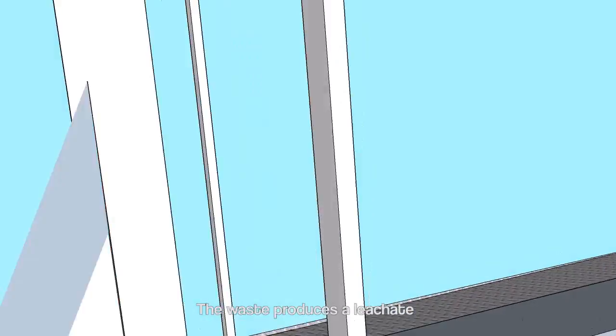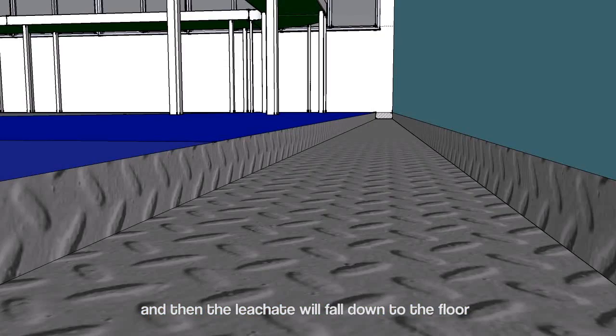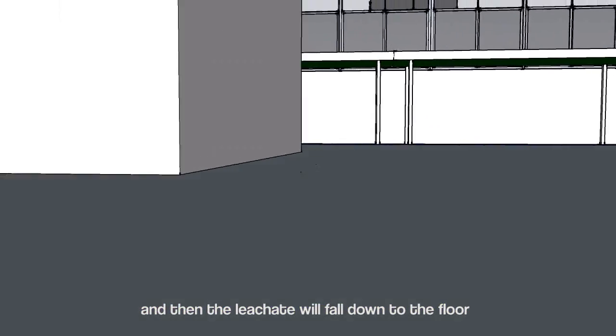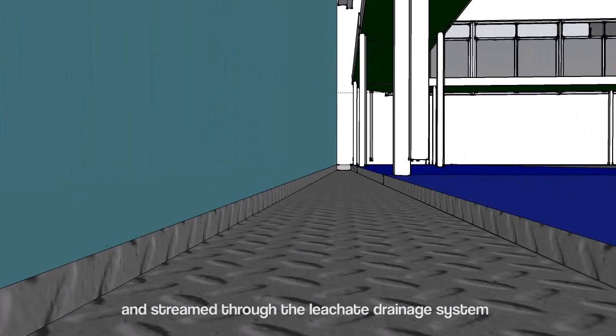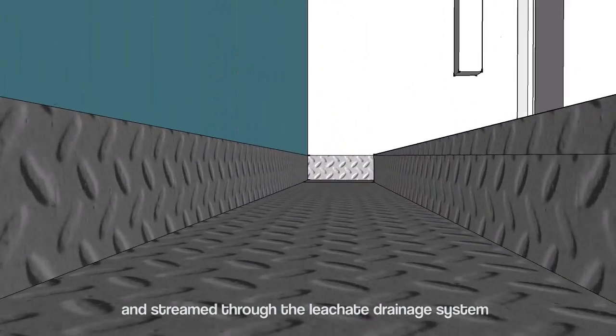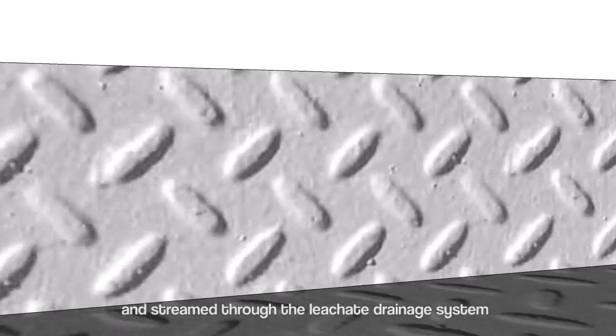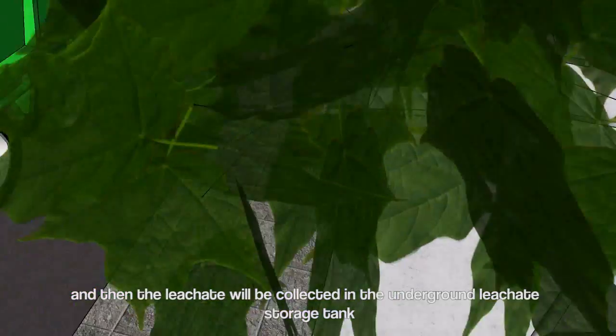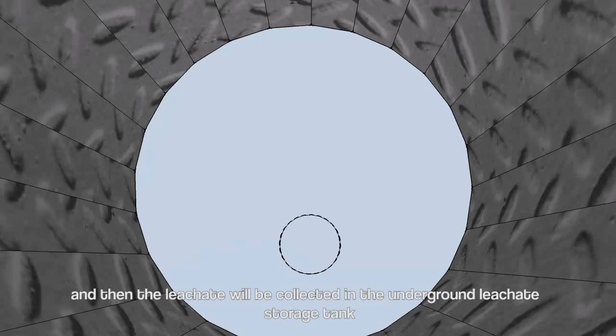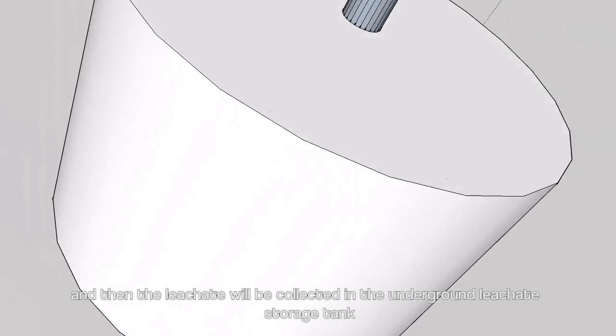The waste produces a liquid. The liquid will fall down into the floor and stream through the liquid drainage system. Then the liquid will be collected in the underground liquid storage tank.